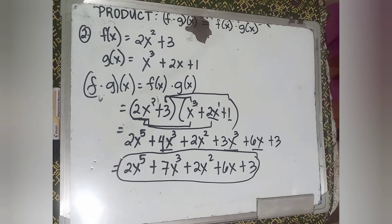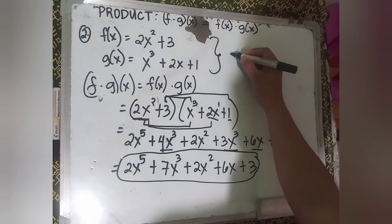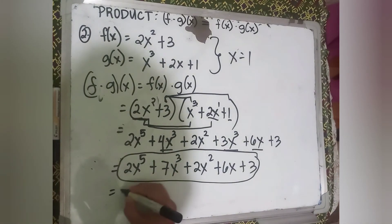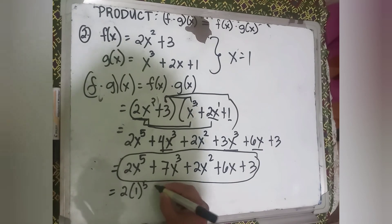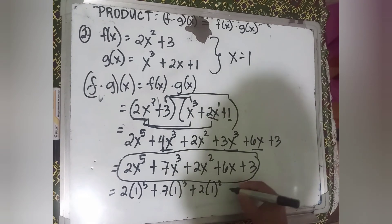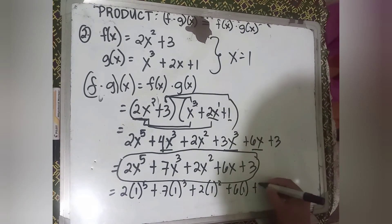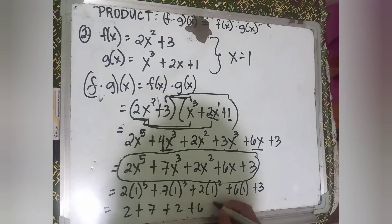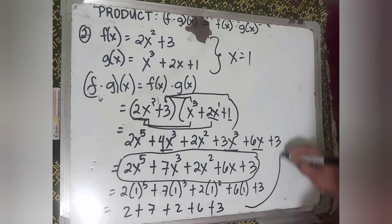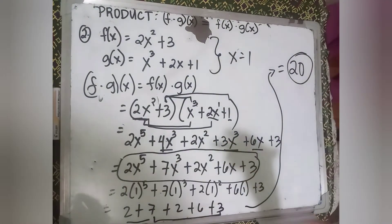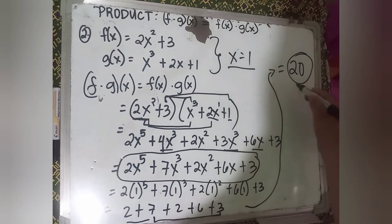What if we assign a value to x? Let's try x equals 1. Substituting: 2 times 1 raised to 5, plus 7 times 1 raised to 3, plus 2 times 1 raised to 2, plus 6 times 1, plus 3. Since any power of 1 is 1, this becomes 2 plus 7 plus 2 plus 6 plus 3, which equals 20. So when x equals 1, the final answer is 20.